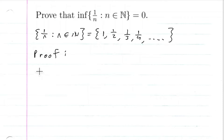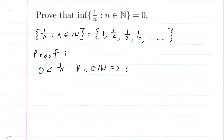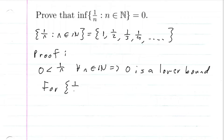We know that 0 < 1/n for every n contained in the natural numbers. This implies that zero is a lower bound for the set {1/n | n ∈ ℕ}.